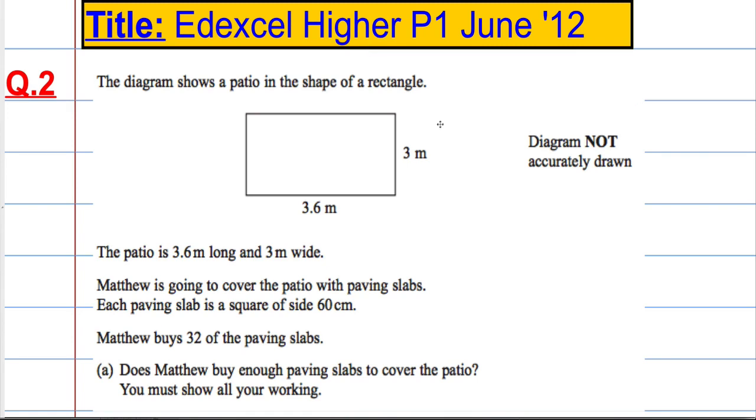Question 2 gives us a diagram of a patio in the shape of a rectangle. We can see that the patio is 3.6 meters by 3 meters. Matthew is going to cover the patio with paving slabs, and each paving slab is a square of side 60 centimeters. Matthew buys 32 of the paving slabs. We're asked, does he buy enough slabs to cover the patio? We must show all of our working.